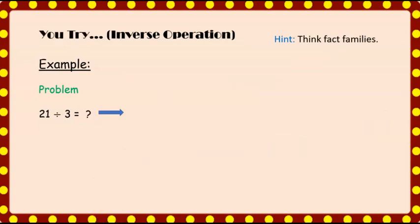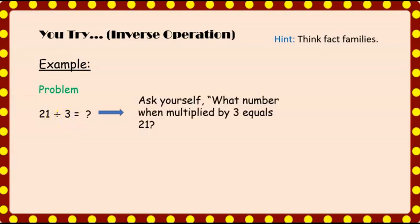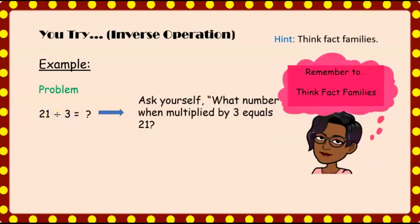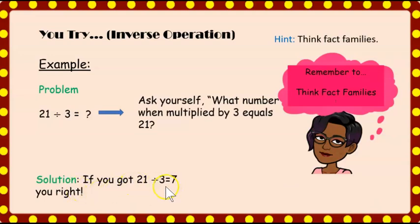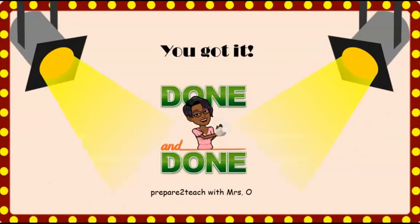This next one, you give it a try. Did you get it? 21 divided by three equals seven — if you got that, you're right. These are proven strategies, so try them out. Done and done.